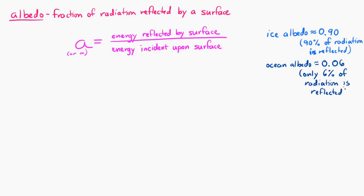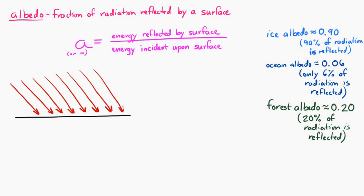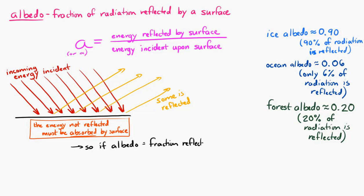Only 6% of the radiation incident upon the ocean is reflected back. And an average forest has an albedo of about 0.2. Now, if the albedo is the fraction that's reflected, then the rest of the energy must be absorbed — because energy coming into a surface either has to be reflected or absorbed. Energy can't be created or destroyed, so it either has to go in or come out. Therefore, 1 minus the albedo is the fraction absorbed by the surface.